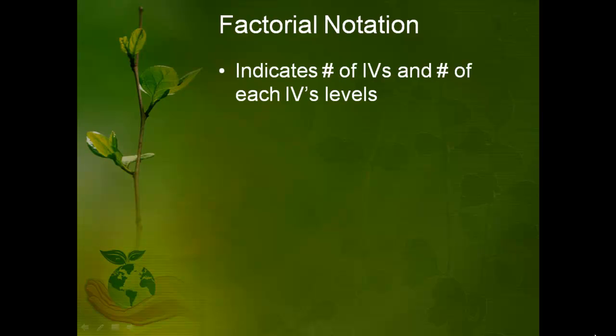So let's look at an example. Let's say I want to know how much people enjoy concerts when the volume is loud or soft and when it's brightly lit or dimly lit. And because this study has more than one independent variable, it will have a factorial notation.